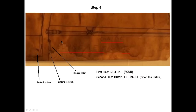Here's a close-up of step four. It says 'quatre' — which is four — and then the second line, which is hard to see, Olivier says reads 'au revoir les treppes,' meaning open the hatch. This is the hatch right here on the original. So step four is: open the hatch.